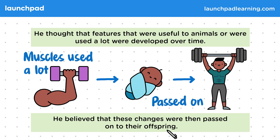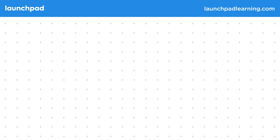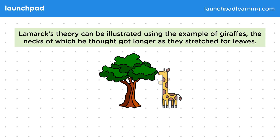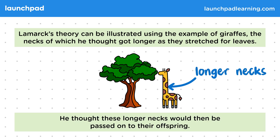Lamarck's theory can be illustrated using the example of giraffes, the necks of which he thought got longer as they stretched for leaves. This is the classic example. Lamarck believed that stretching for leaves led to longer necks in giraffes, and he thought these longer necks would then be passed on to their offspring.